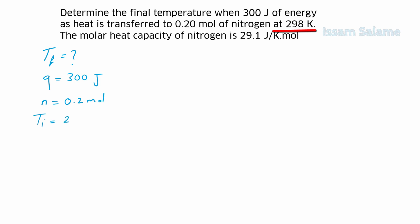Temperature initial equal to 298 Kelvin, and the molar heat capacity is 29.1. We start with the formula Q equal NC Delta T. We need to calculate Delta T, so isolate it - we divide both sides by NC, so Delta T is equal to Q divided by NC. We replace the variables with their values, we divide 300 by 0.2 multiplied by 29.1. The answer to the nearest tenth is going to be 51.5 K.